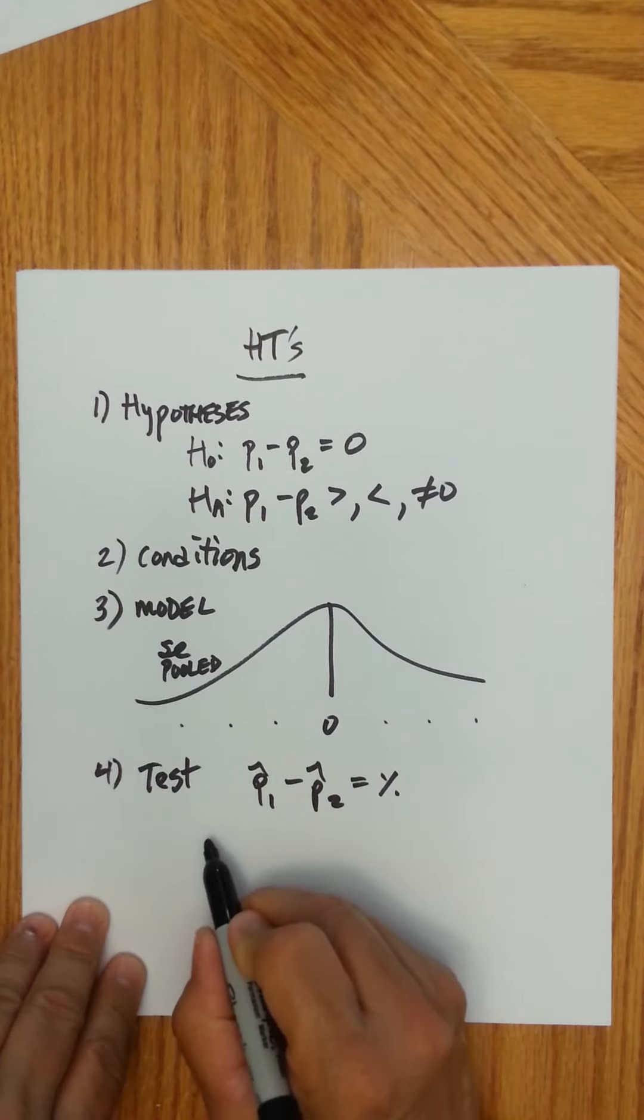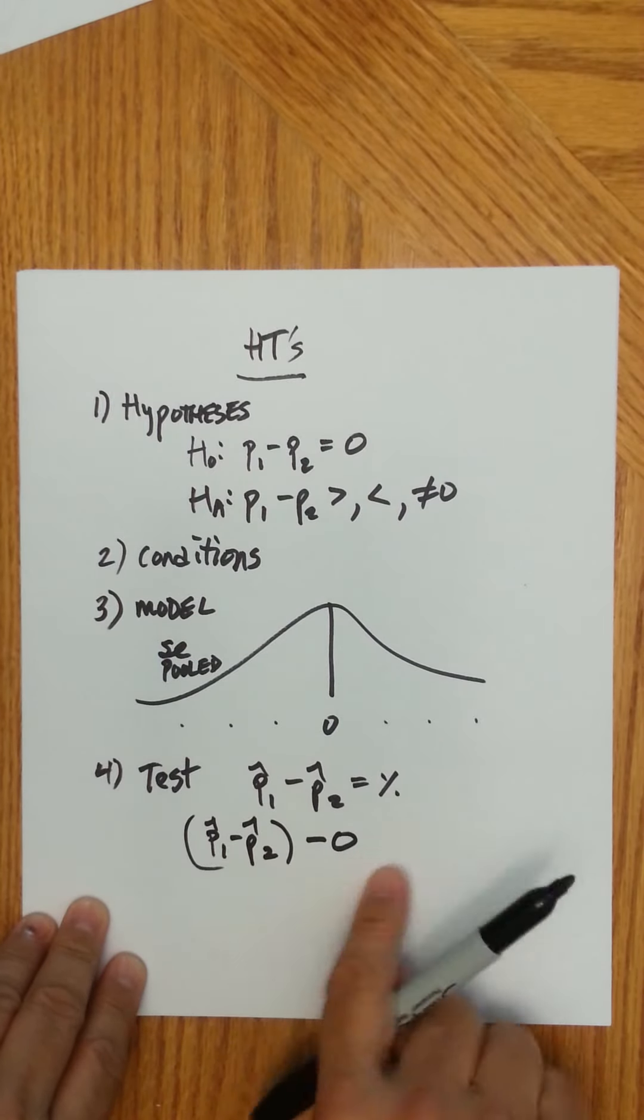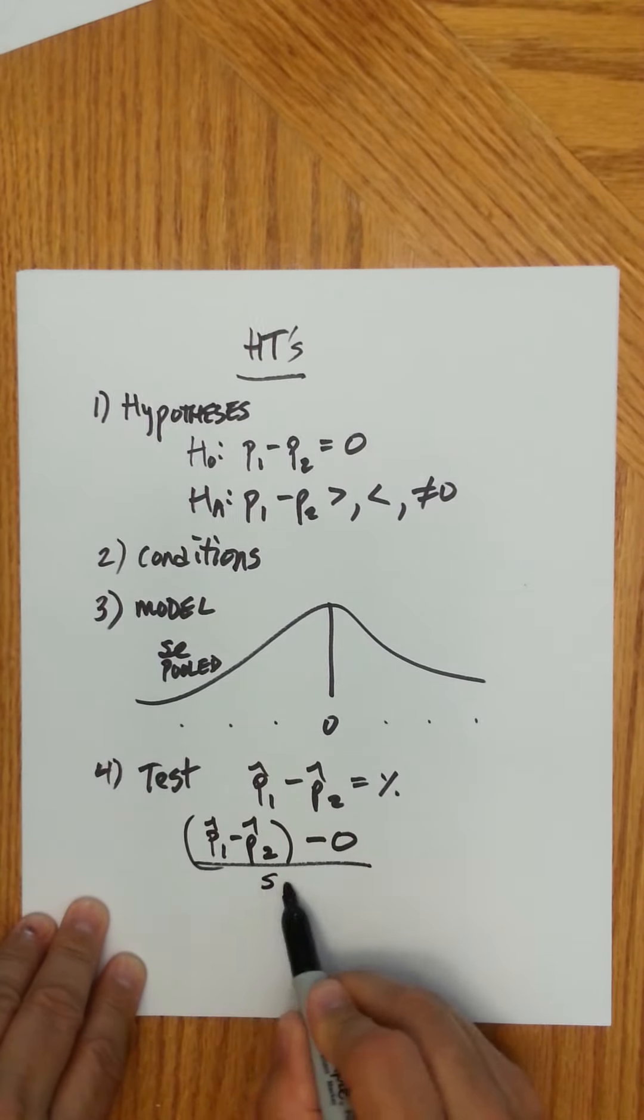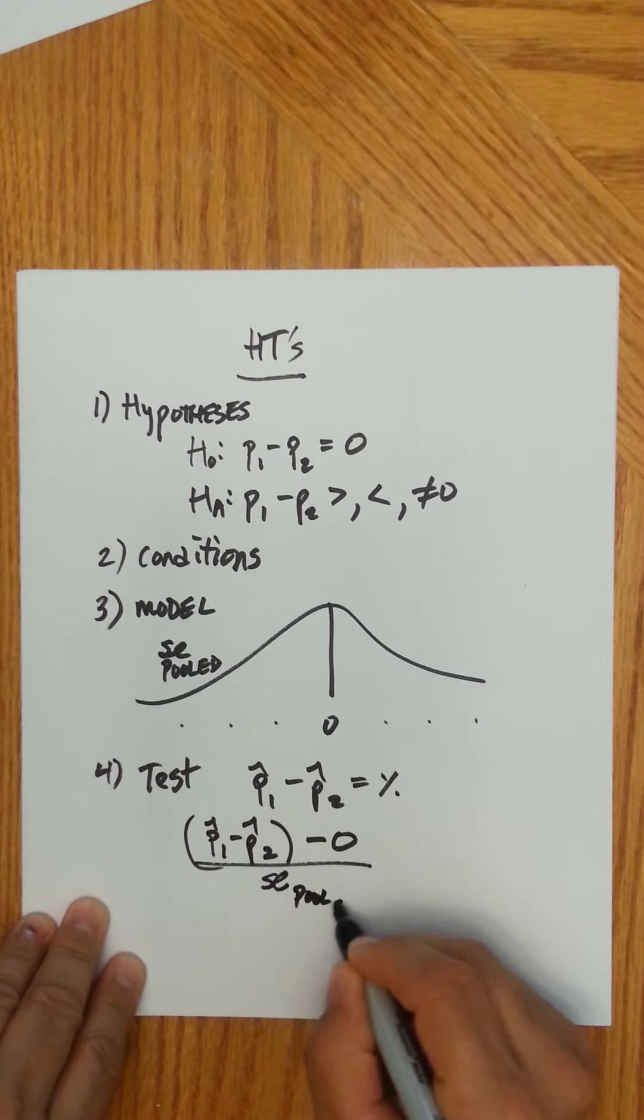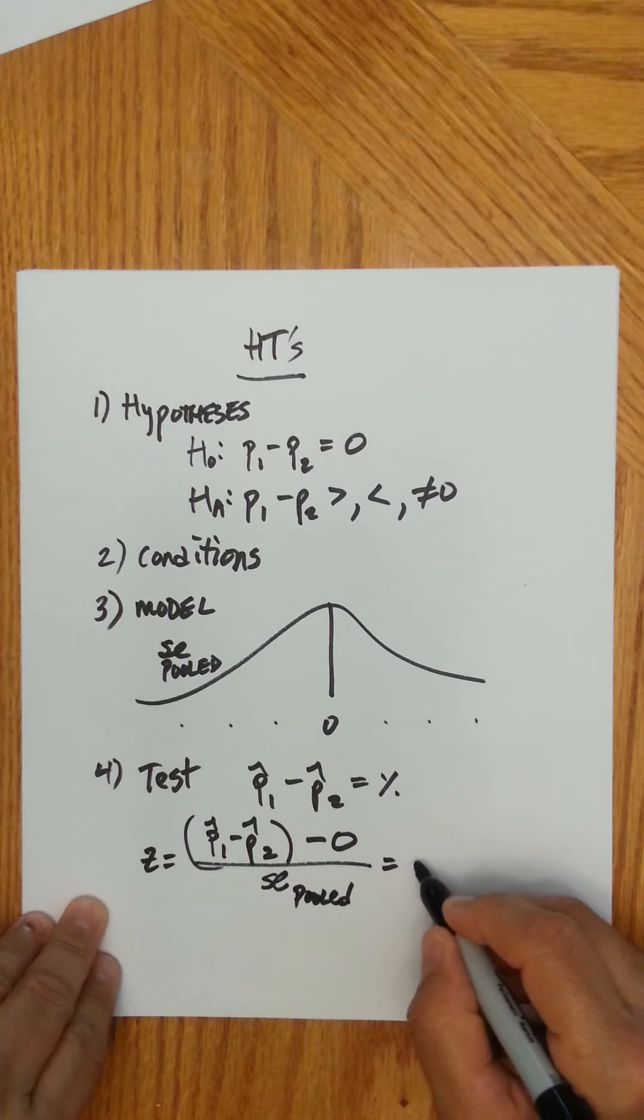And so in your test, you're going to basically say how far is your sample difference, your sample differences, so p hat one minus p hat two, how far is that from zero? Now this is just theoretical, over the standard error that's pooled. And that's how you're going to get your z-score, some z-score.